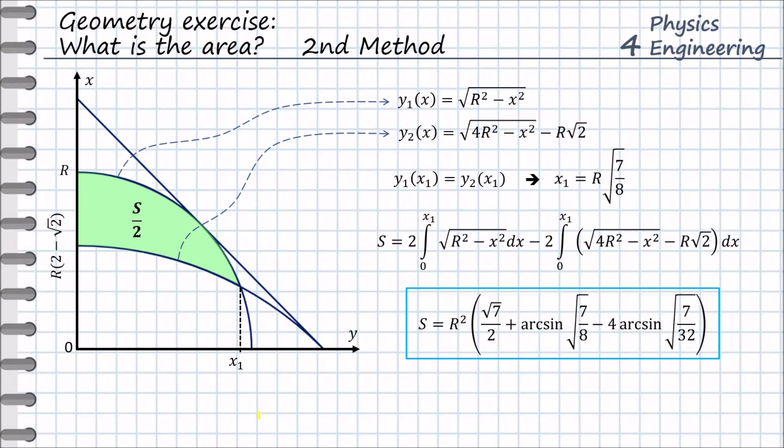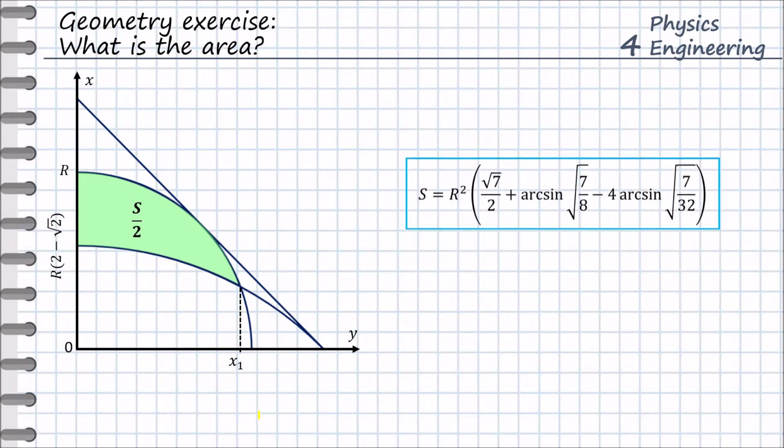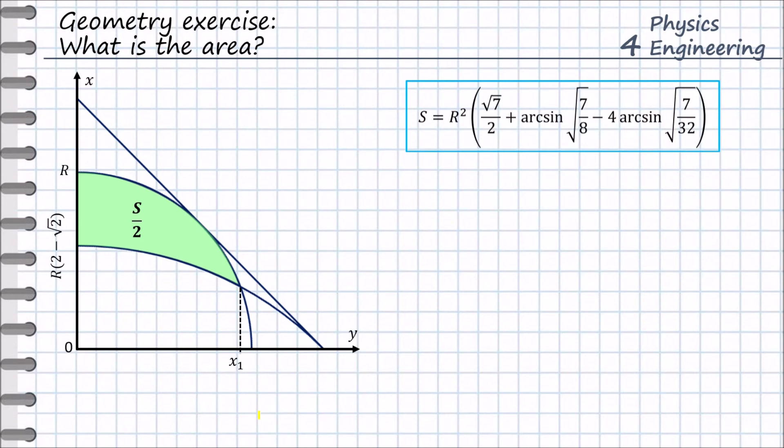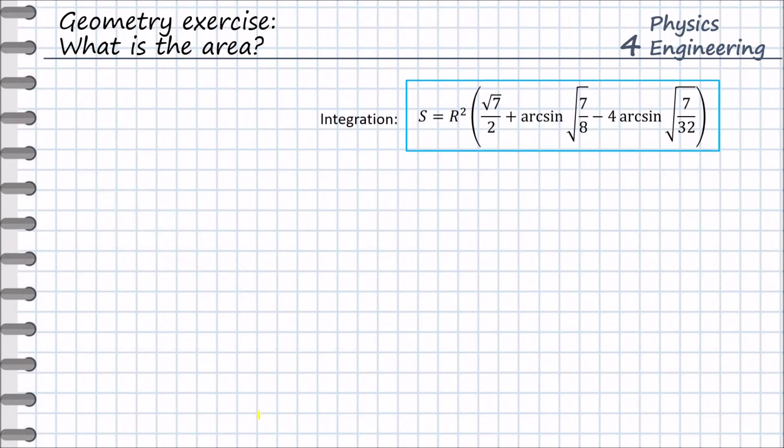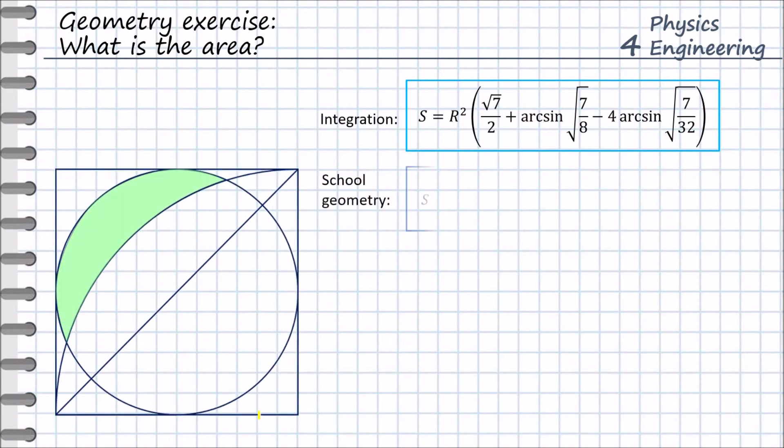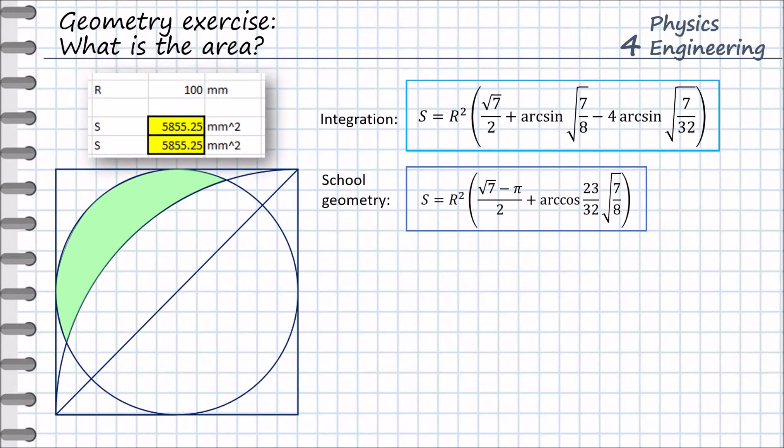But it looks differently than the solution by the first method. Let us now compare these two solutions. This is the solution by the integration method, and this is the solution using the school geometry method. We can spend some time and using trigonometric formulas compare these two results. But it was easier to just use Excel and calculate the result from each formula individually. Excel gives the same answer.